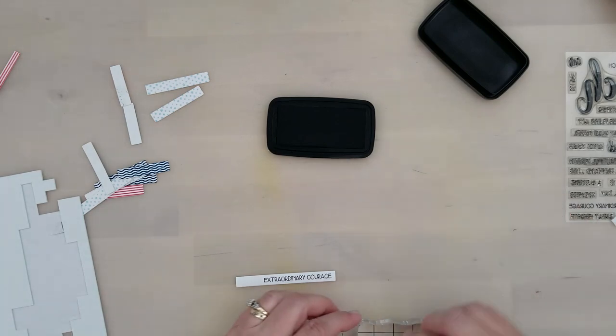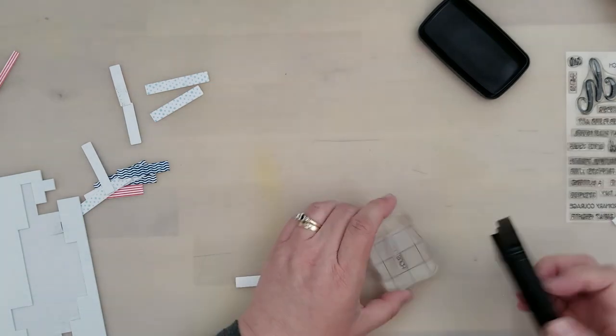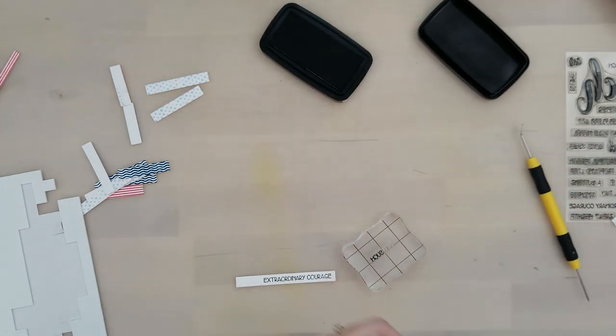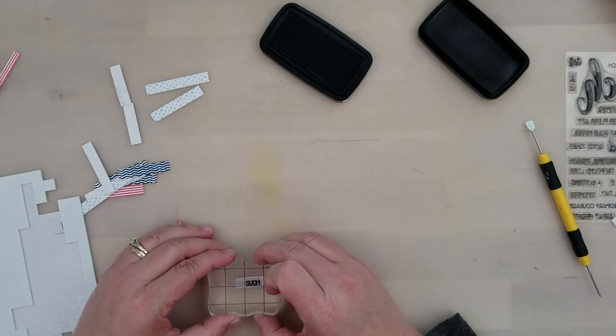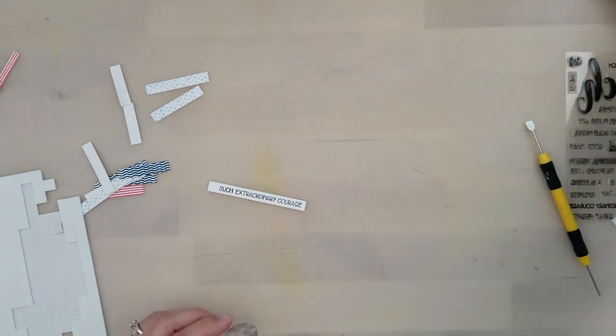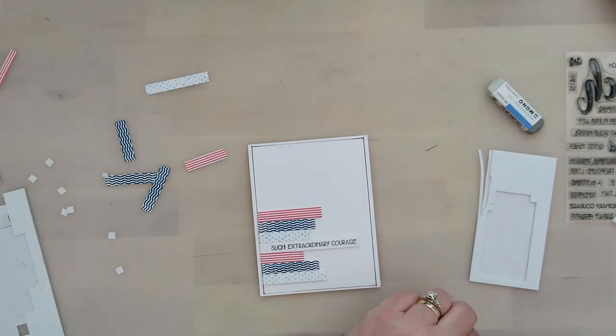I'm going to go ahead and stamp my sentiment on a piece of white cardstock - this was just trimmed down with a paper trimmer. I'm using the same sentiment on the card as I did on the layout - 'Such Extraordinary Courage.' I do want to show you that I'm using a piece of removable tape to mask off the word so that I can stamp just that word 'such' there on my sentiment.